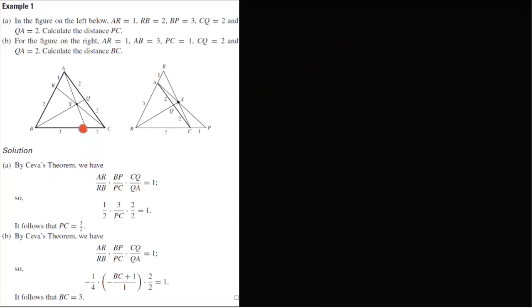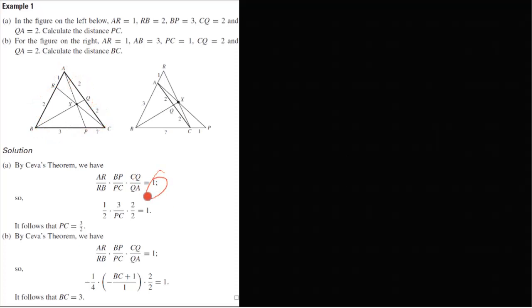You have a problem. The first thing is, one figure has points. What is it? It is a PC — it is not a PC. What is it? This ratio is equal to 1. Ar is 1, Rb is 2, Bb is 3. It is a PC.